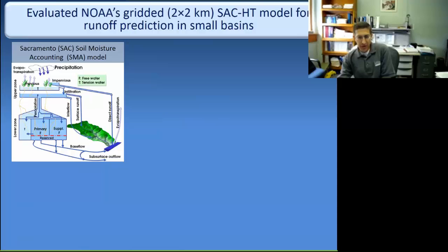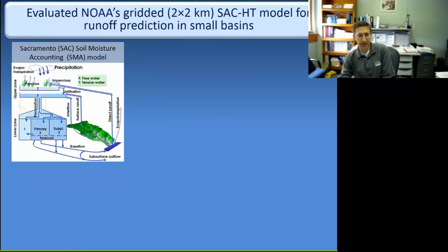Similar to the tool that Steve was describing and the tool that Wisconsin and other north-central US states are using, it's the Sacramento soil moisture accounting model — more specifically the heat transfer version of that model. It operates on a two-by-two kilometer grid. We're working with the Middle Atlantic River Forecast Center and using this model to get at runoff generation in small headwater basins.